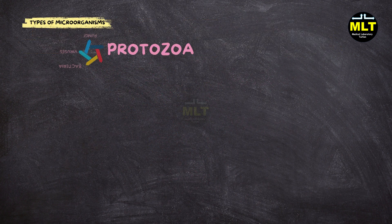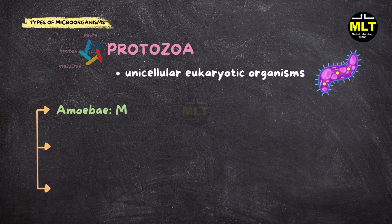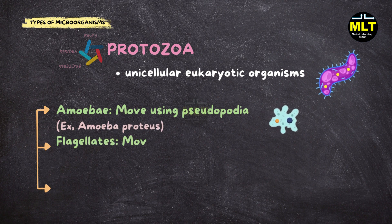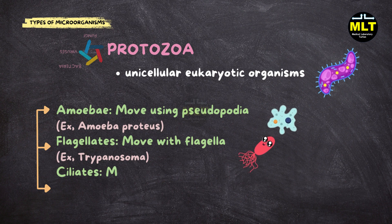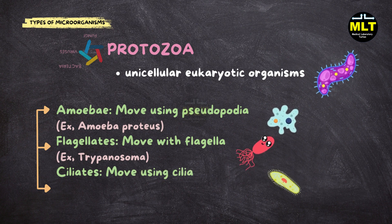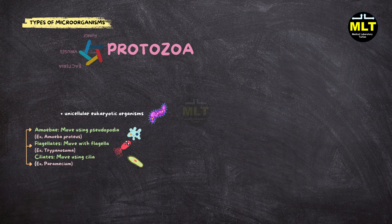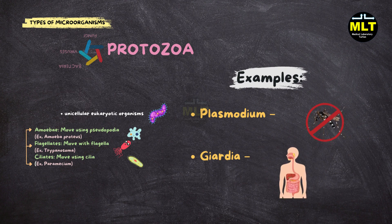Protozoa characteristics. Protozoa are unicellular eukaryotic organisms that exhibit diverse forms and movement mechanisms, including: Amoebae, which move using pseudopodia — example Amoeba proteus; Flagellates, which move with flagella — example Trypanosoma; and Ciliates, which move using cilia — example Paramecium. Notable protozoa include Plasmodium, which causes malaria, and Giardia, which leads to gastrointestinal illness.